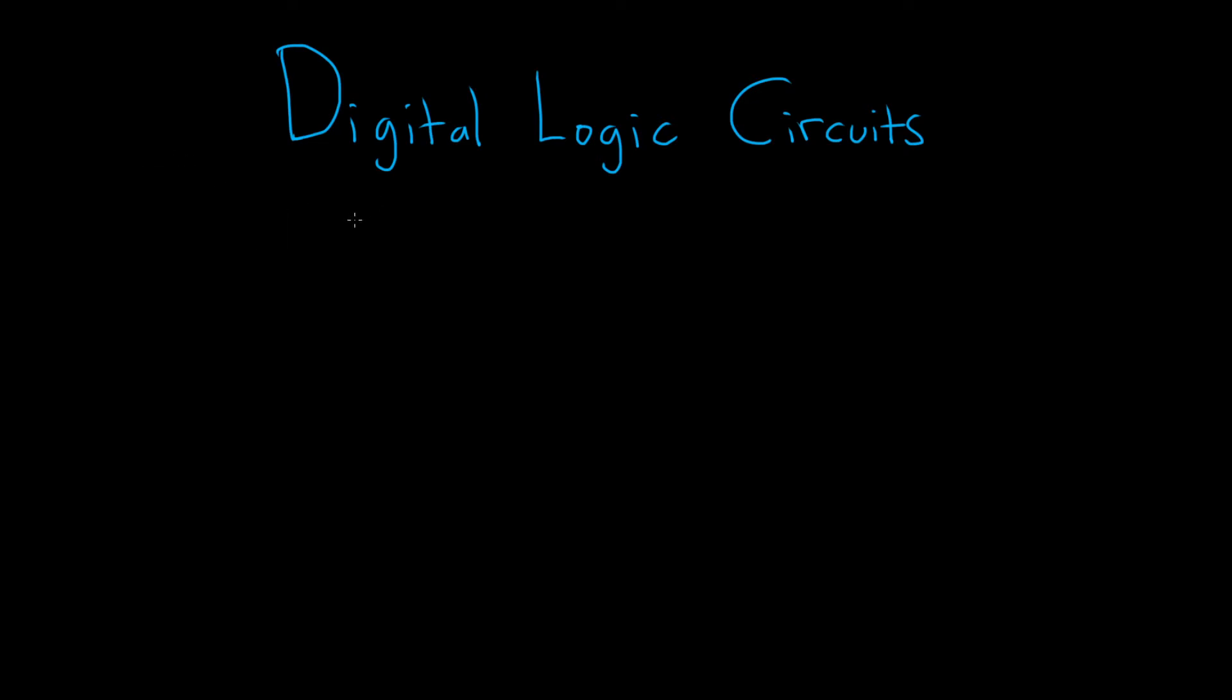In this video I want to talk about the relationship between circuits and mathematical logic. So first let's discuss the notion of a switch. So say we have something that looks like this. So in this case we would say the switch is open. And if we have something that looks like this, we'll say the switch is closed.